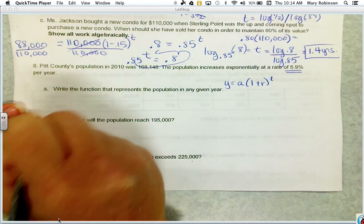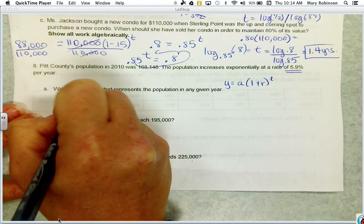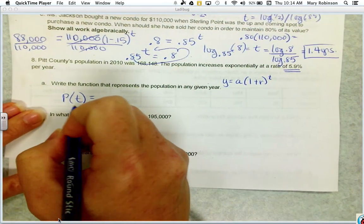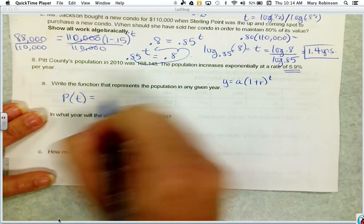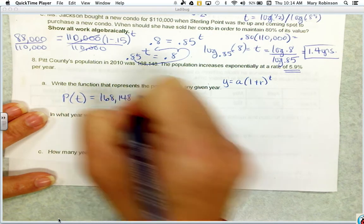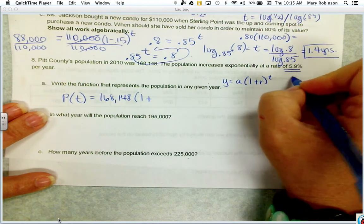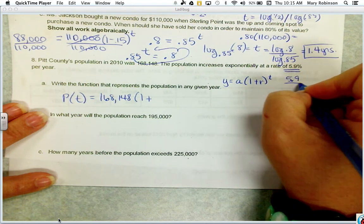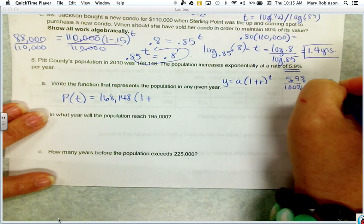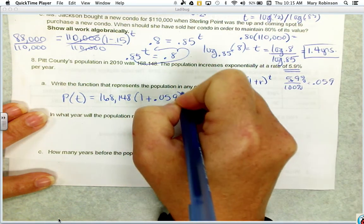Our function could be population as a function of time. So come up with some function notation there. Population as a function of time where our initial population was 168,148. 1 plus our rate as a decimal. Remember to take your percentage and divide by 100%, and that gives you 0.059. So 0.059 to the t power.